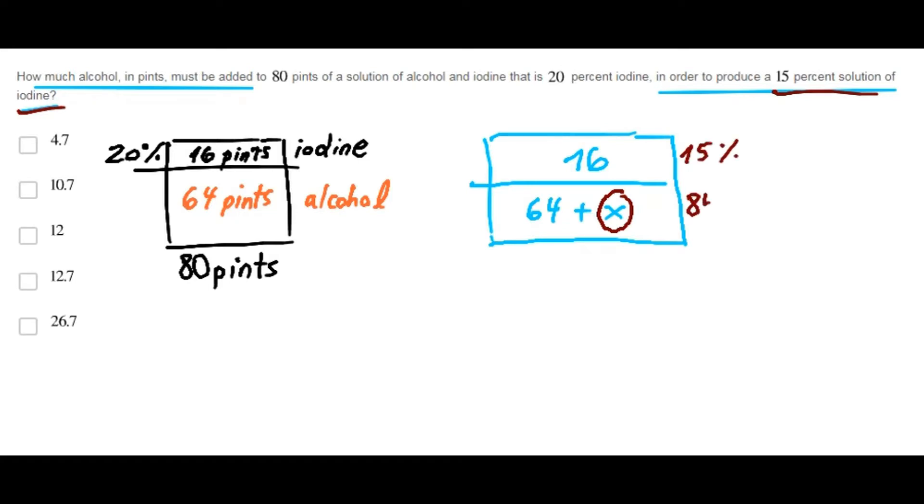And therefore, alcohol represents 85% of the new solution. The new solution contains 80 plus X pints. And as you can see, iodine represents only 15% of the new solution.